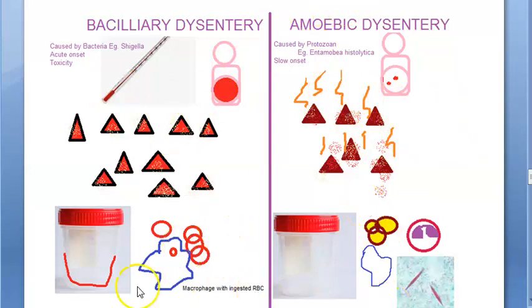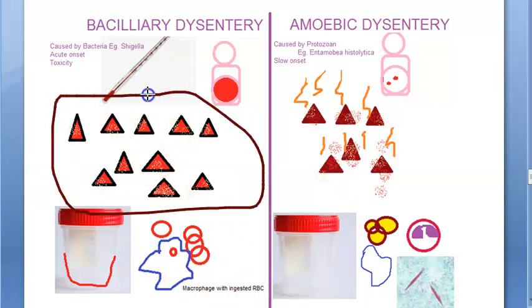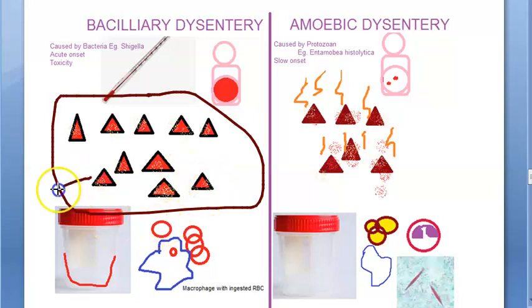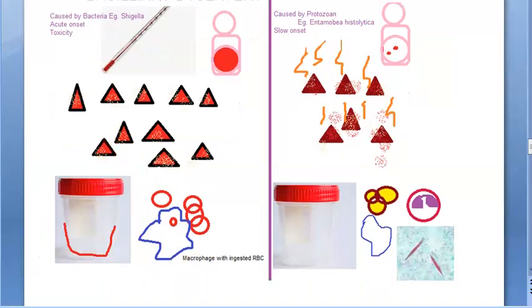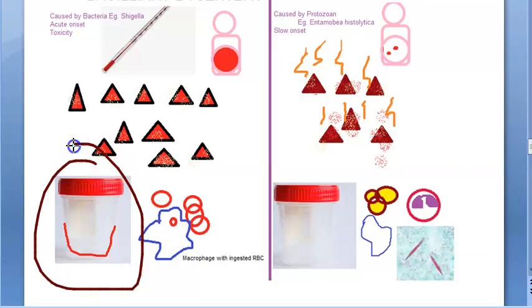Coming to the stools in bacillary dysentery: the patient is passing over 10 stools per day, so the frequency is high. The color is bright red — it is like blood. Blood and mucus are more, and feces are less. The stool kind of sticks to the container. It has an alkaline reaction.